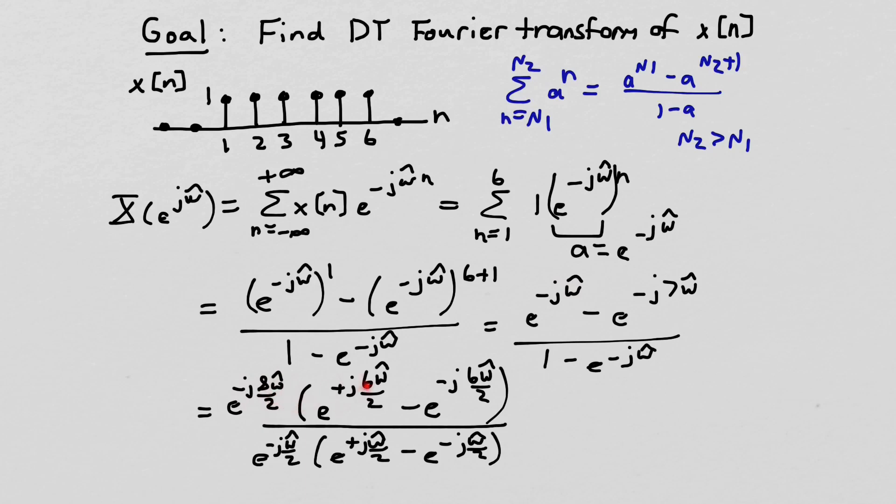If I multiply back through by this, let's see if I get it right. So e^(-j8ω̂/2) times e^(j6ω̂/2) would be e^(-j2ω̂/2), which is this, right? Reduces to e^(-jω̂). e^(-j8ω̂/2) times e^(-j6ω̂/2) is e^(-j14ω̂/2), which ends up being e^(-j7ω̂). So I'm okay, all right? And I did this because I knew that I wanted the term in here to be the length of this signal divided by 2.